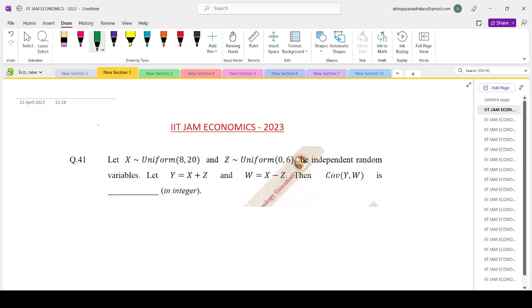Let X be distributed with a uniform distribution (8,20) and Z be uniform (0,6), independent random variables. We define Y as X plus Z and W as X minus Z. We want to find out the covariance of Y and W.